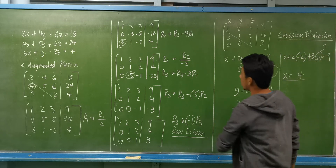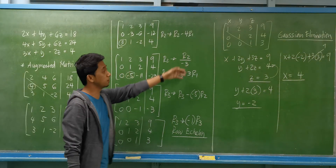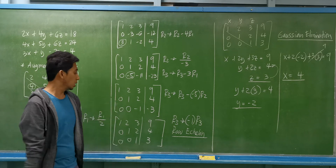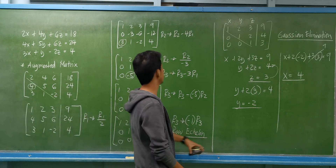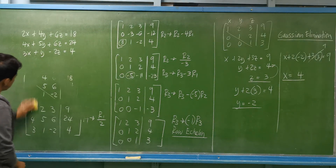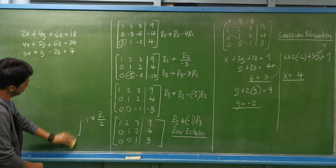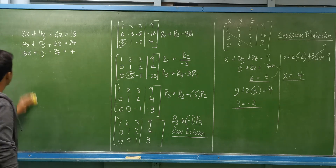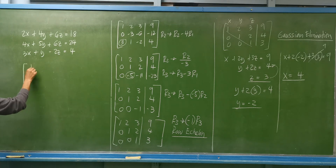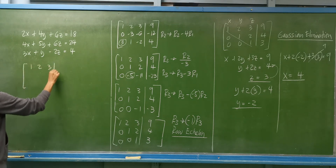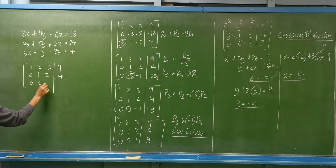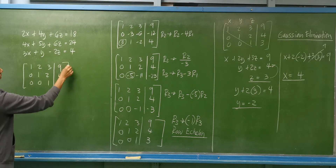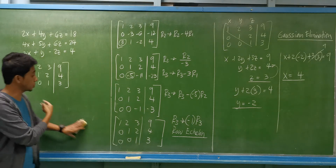For the Gauss elimination, all we need is the row echelon form. But if we continue to reduce this row echelon form further, that is the Gauss-Jordan elimination method. So continuing from the row echelon form — row 1: 1, 2, 3, 9; row 2: 0, 1, 2, 4; row 3: 0, 0, 1, 3 — we now reduce it further.